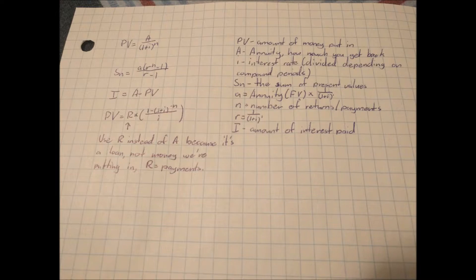The last equation is the big bad of 8.5. It is PV equals R times bracket 1 minus bracket 1 plus I bracket to the power of negative N bracket divided by I. R is used here instead of A because it's a loan and not money we put in. So R is the payment you have to give back.